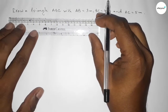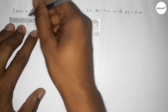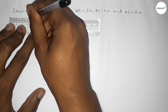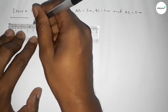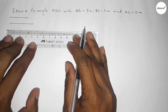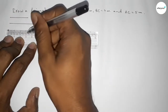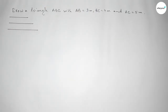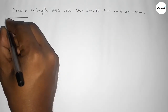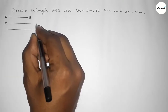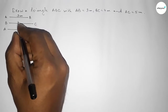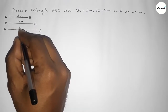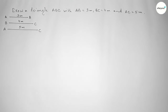First of all, we have to draw a line of length 3 centimeters, then another line of length 4 centimeters, and lastly a line of length 5 centimeters. So this one is the AB line, this one is the BC line, and this one is the AC line — 3 centimeters, 4 centimeters, and 5 centimeters respectively.